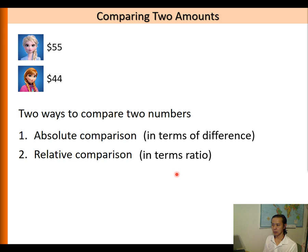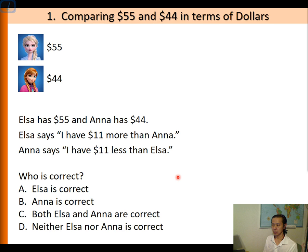As an example, we will be comparing $55 and $44. The first question is: Elsa says I have $11 more than Anna, and Anna says I have $11 less than Elsa. Who is correct? In this case, the answer is C — both of them are correct because the $11 difference applies both ways.